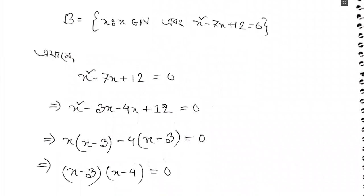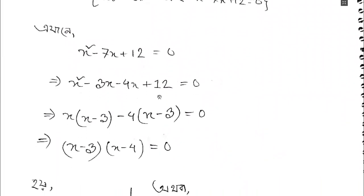x squared minus 7x plus 12 is equal to 0. We need to do middle-term splitting: x squared minus 3x minus 4x plus 12 is equal to 0. So x times (x minus 3) minus 4 times (x minus 3) is equal to 0.